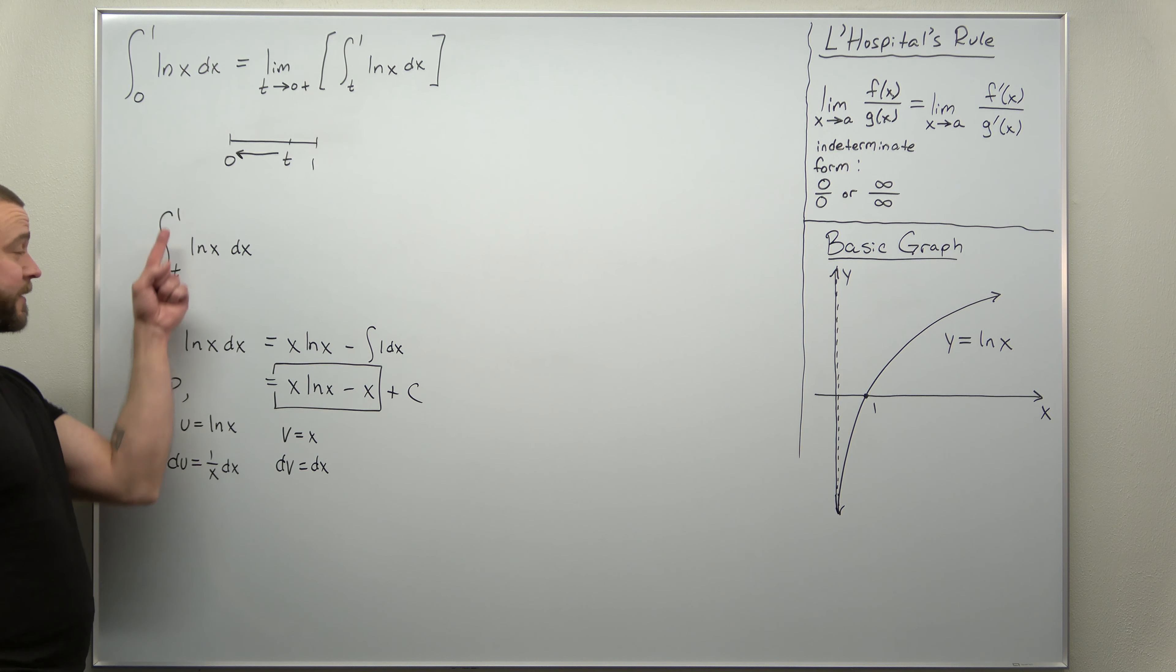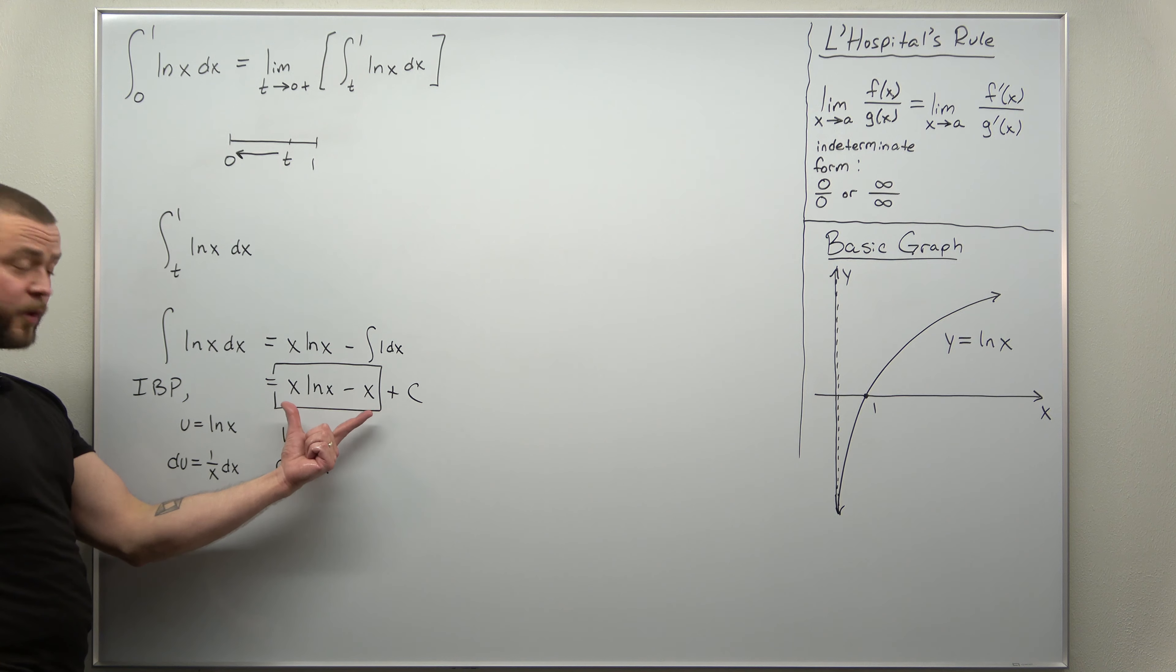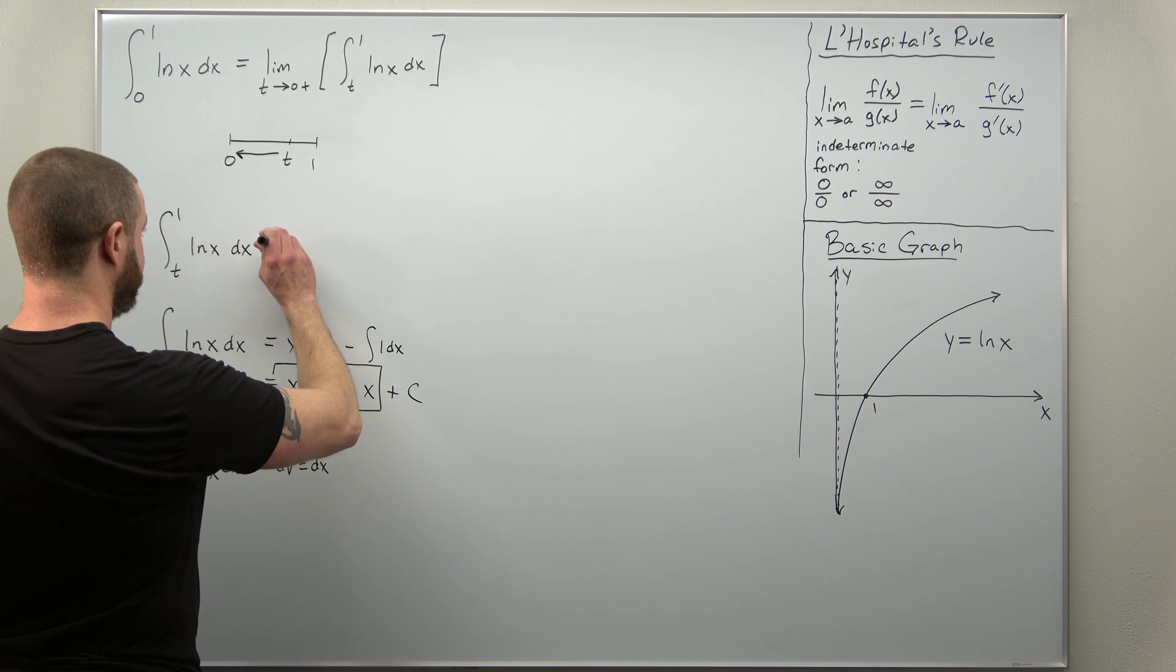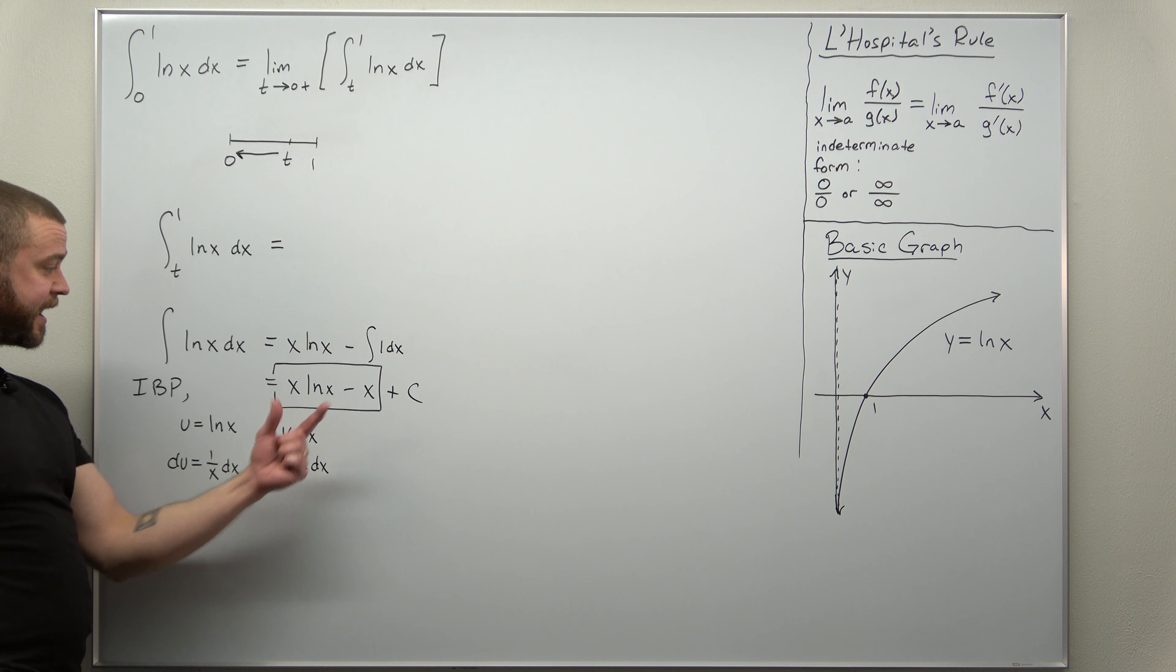x natural log of x minus x plus c. And since we have a definite integral, we just need the part without plus c. So we have our antiderivative.